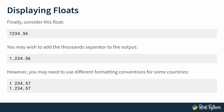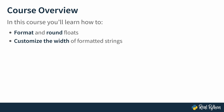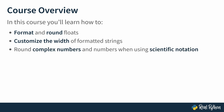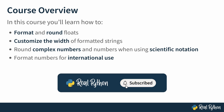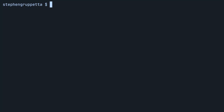So let's see what's coming up in this course. In the coming lessons, you'll learn how to format and round floats, how to customize the width of a formatted string — such as to create a price list in a nice table. You'll also look at how to round complex numbers or numbers using scientific notation, and finally how to format numbers for international use to adapt to different conventions around the world. Let's get started exploring floats and f-strings.